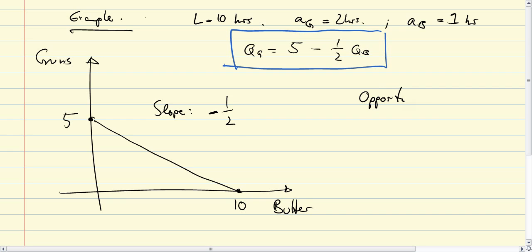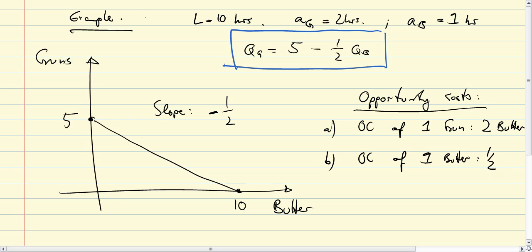Again, the idea of opportunity costs—what does it mean in this context? The opportunity cost of one gun is 2 barrels of butter. And the opportunity cost of one barrel of butter is half a gun, or half a case of guns.